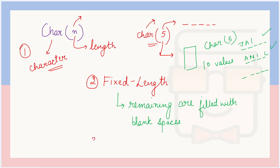The value of n in the CHAR data type can range from 0 to 255. So the maximum length string that can be stored in a CHAR column is 255 characters — you can reserve up to 255 spaces for each value. These are the key points for the CHAR data type.